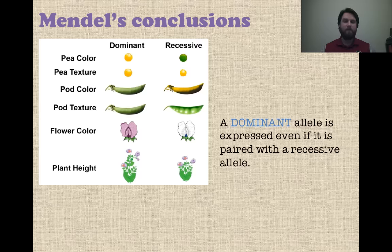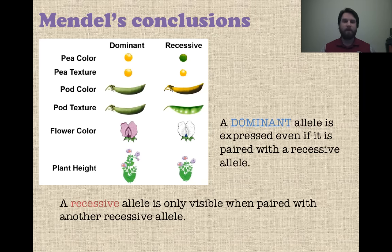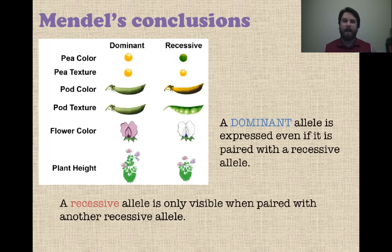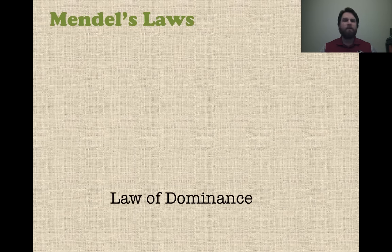Another concept he introduced is dominant versus recessive. A dominant allele is expressed even if it is paired with a recessive allele — if you have one dominant and one recessive, the dominant trait dominates, that's why it's called dominant. The recessive allele is only visible when paired with another recessive allele. We use capital letters to denote a dominant allele and lowercase letters to denote a recessive allele.